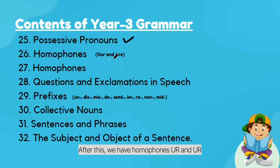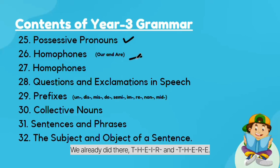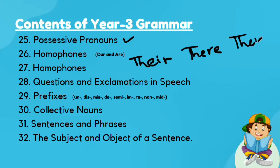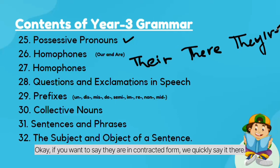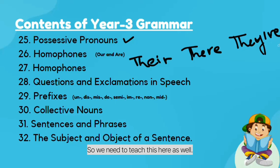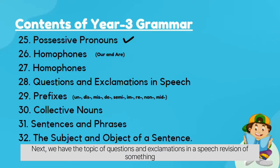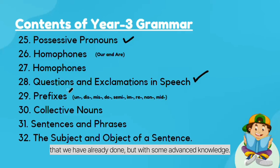After this we have homophones for 'are' and 'our'. Next we have homophones for 'there' — we already did T-H-E-I-R and T-H-E-R-E in level 1, but here we are adding the contraction 'they're'. So if you want to say 'they are' in contracted form, for example 'they're playing', we teach this here as well. Next we have the topic of questions and exclamations in speech — a revision of something already done but with some advanced knowledge.